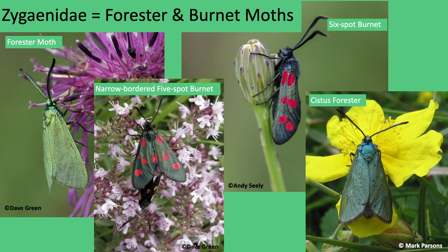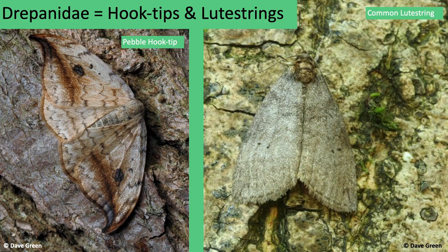Forester and burnet moths — ten species in Britain and Ireland, four in Yorkshire. They are also day flyers. Key characteristics are round-tipped narrow forewings, stout antennae that are always pointed forward, and in some cases they're clubbed like those of butterflies. Adults and larvae are toxic to non-insect predators and they release poisons when attacked, apart from foresters, which are not.